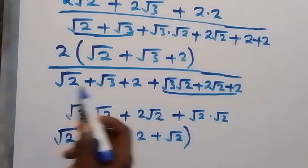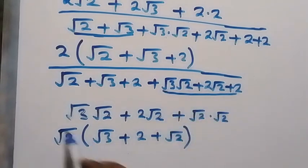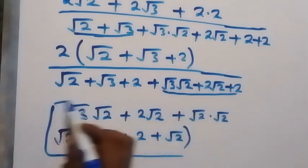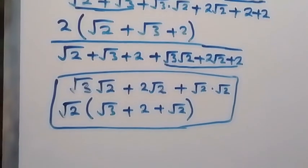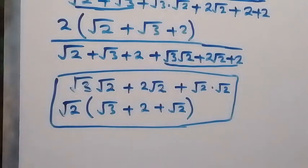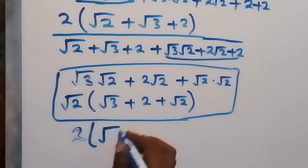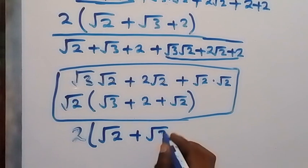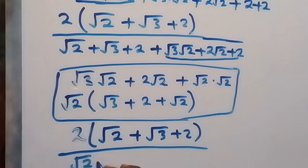Now we have something of the form root 2 plus root 3 plus 2. We replace this with what we found: root 2 into bracket (root 3 plus 2 plus root 2). So this fraction now becomes 2 into bracket (root 2 plus root 2 plus root 2·root 3 plus 2), all divided by root 2 plus root 3 plus 2.